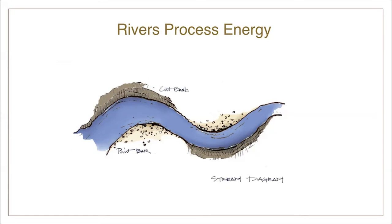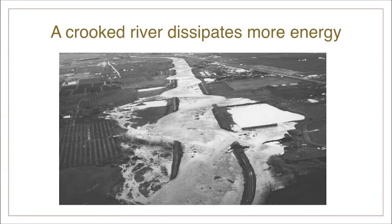Another way that rivers process energy is by becoming longer. The water flowing with a lot of energy starts to erode the first bank it reaches, creating a cut bank. The current then bounces off that bank and hits the opposite bank a little further down, creating a cut bank there too. At the same time, the eroded material gets deposited across from the cut banks, creating point bars. This process repeats itself as the river flows downstream, and that's how a river's snaking, meandering form is created. In this way, the channel becomes longer and less steep. The Walla Walla River offers a great visual example of the concept of crookedness as a river's natural flow path.